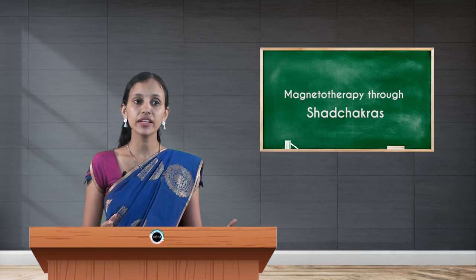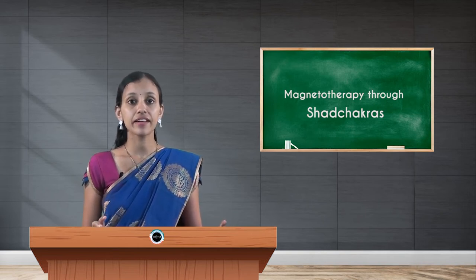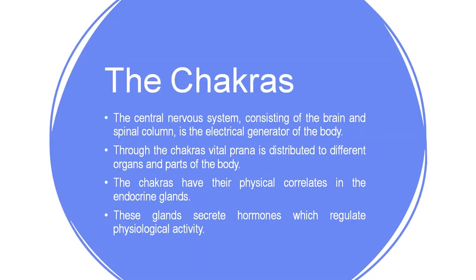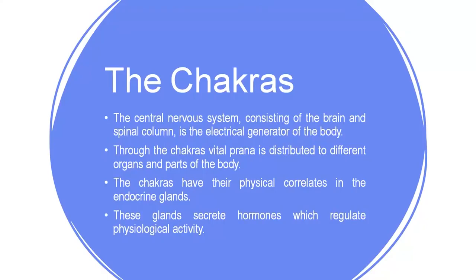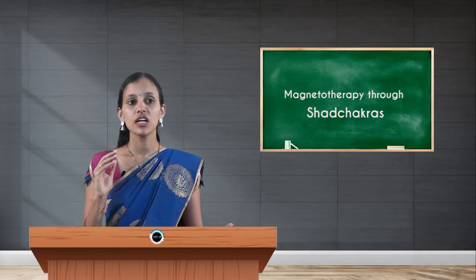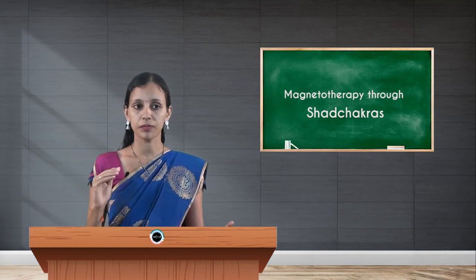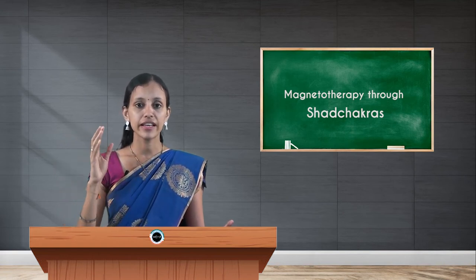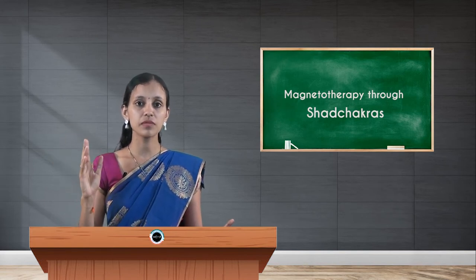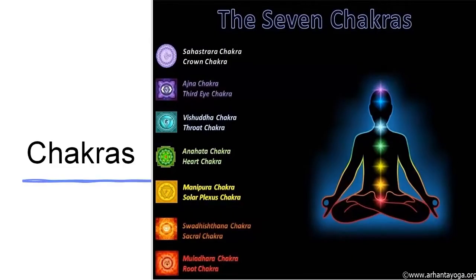The central nervous system, consisting of the brain and spinal column, is the electrical generator of the body. Through the chakras, vital prana is distributed to different organs and parts of the body. If the chakras are blocked, prana circulation may be impaired. Chakras have their physical correlates in the endocrine glands, which secrete hormones that regulate physiological activity. Each chakra corresponds with a different endocrine gland.